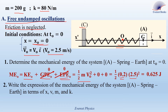Write the expression of the mechanical energy of the system A-spring-Earth in terms of x, V, M, and K. As seen in part one, mechanical energy is the sum of kinetic energy, gravitational potential energy, and elastic potential energy. Because G moves along the x-axis during the whole oscillation, GPE is always zero. So we have kinetic energy plus elastic potential energy. Therefore, Me equals one-half mV squared plus one-half kx squared.